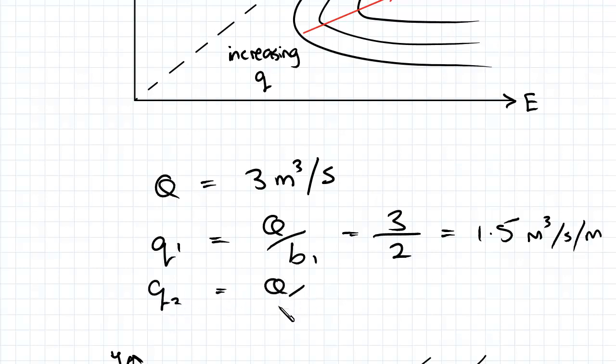q2 is going to be q divided by b2, which I just said was 3 divided by 1.5, so that will be 2 meters cubed per second per meter. So as we go from upstream to downstream our flow rate per meter width increases.